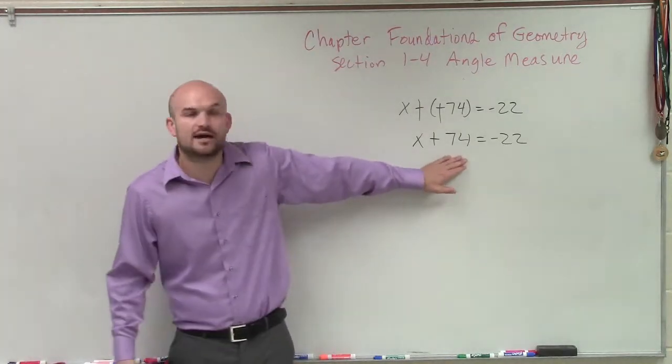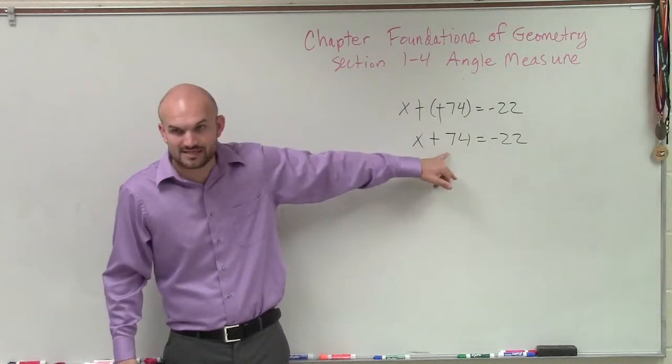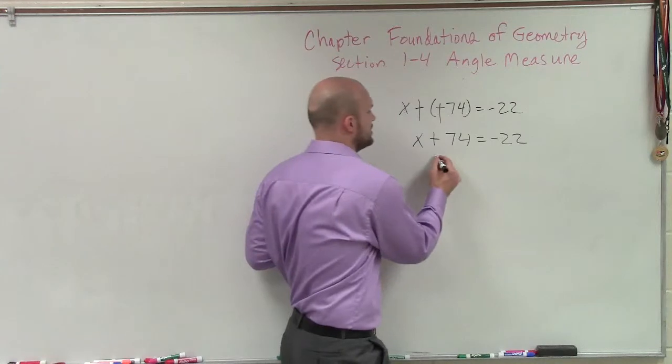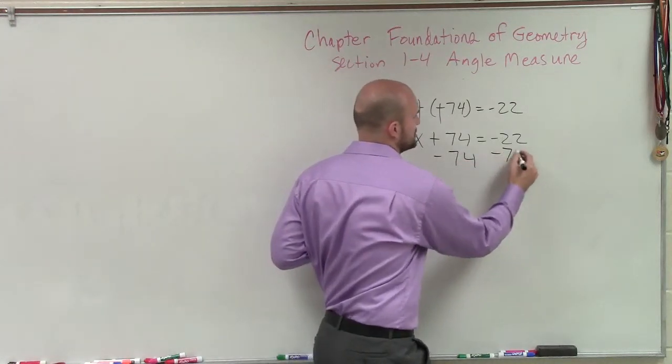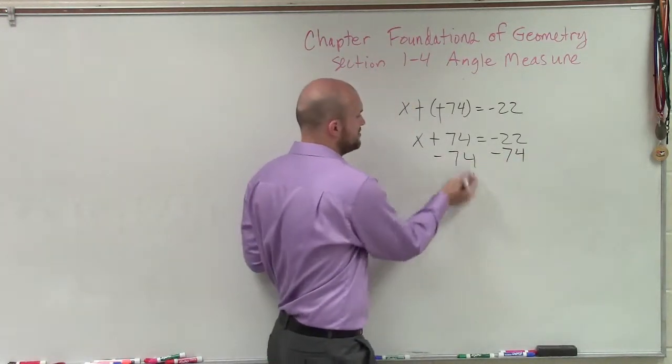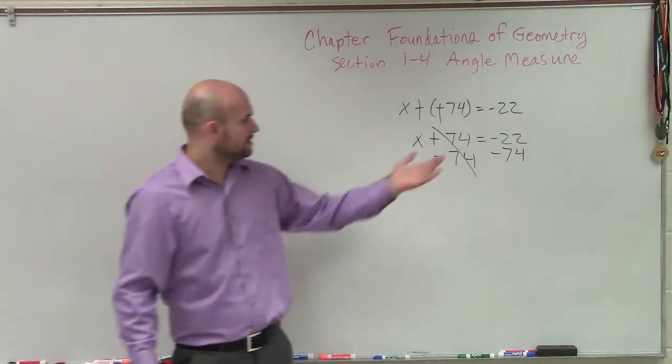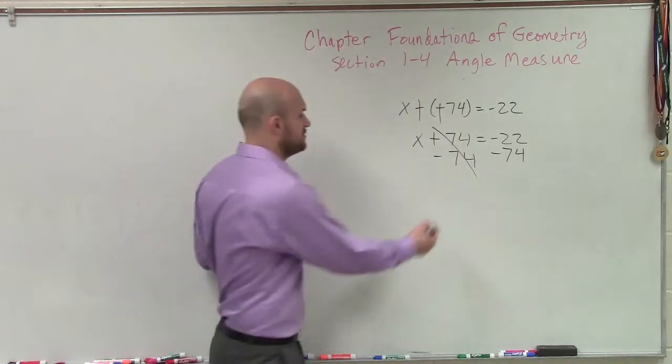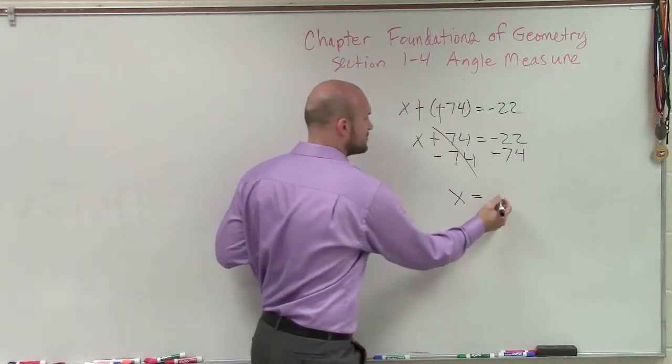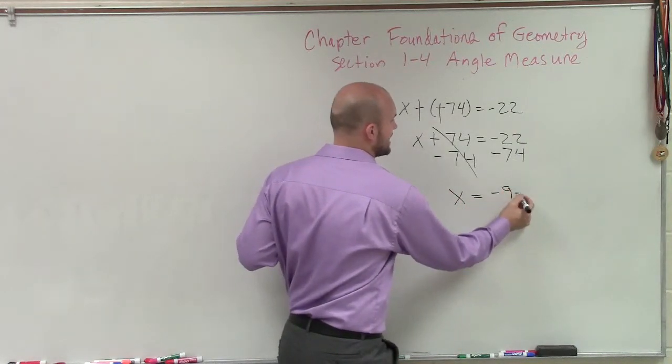So then, now I say, all right, my variable x is being added by 74, so to undo addition, I need to subtract, and I'll use the subtraction property of equality to subtract on both sides. Positive 74 minus 74 gives you 0. 0 plus x is just going to leave you with x, so x equals negative 96.